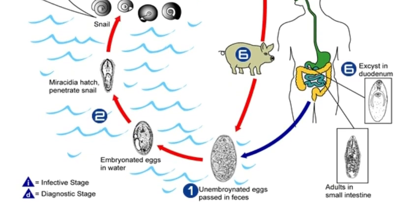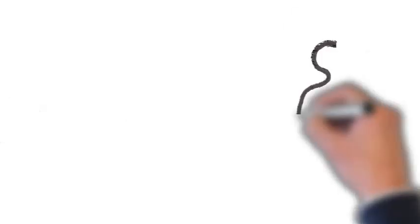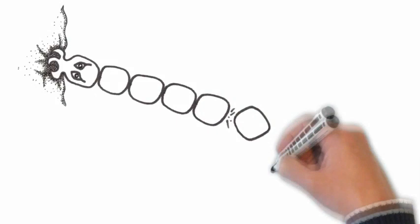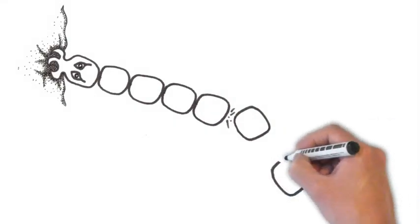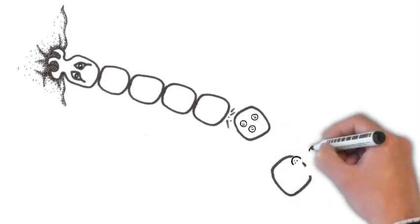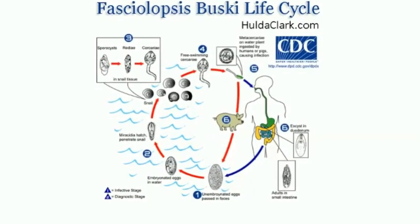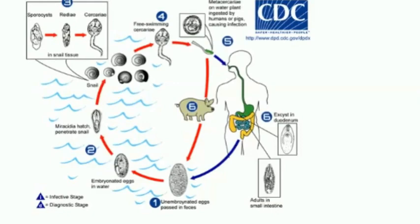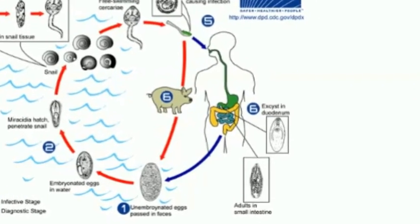It then fastens itself to the intestinal lining and begins to develop into an adult. Adult lives in your intestine and can produce 1,000 eggs per bowel movement and live many years. Note that the adult is the only stage that normally lives in the human, and then only in the intestine.